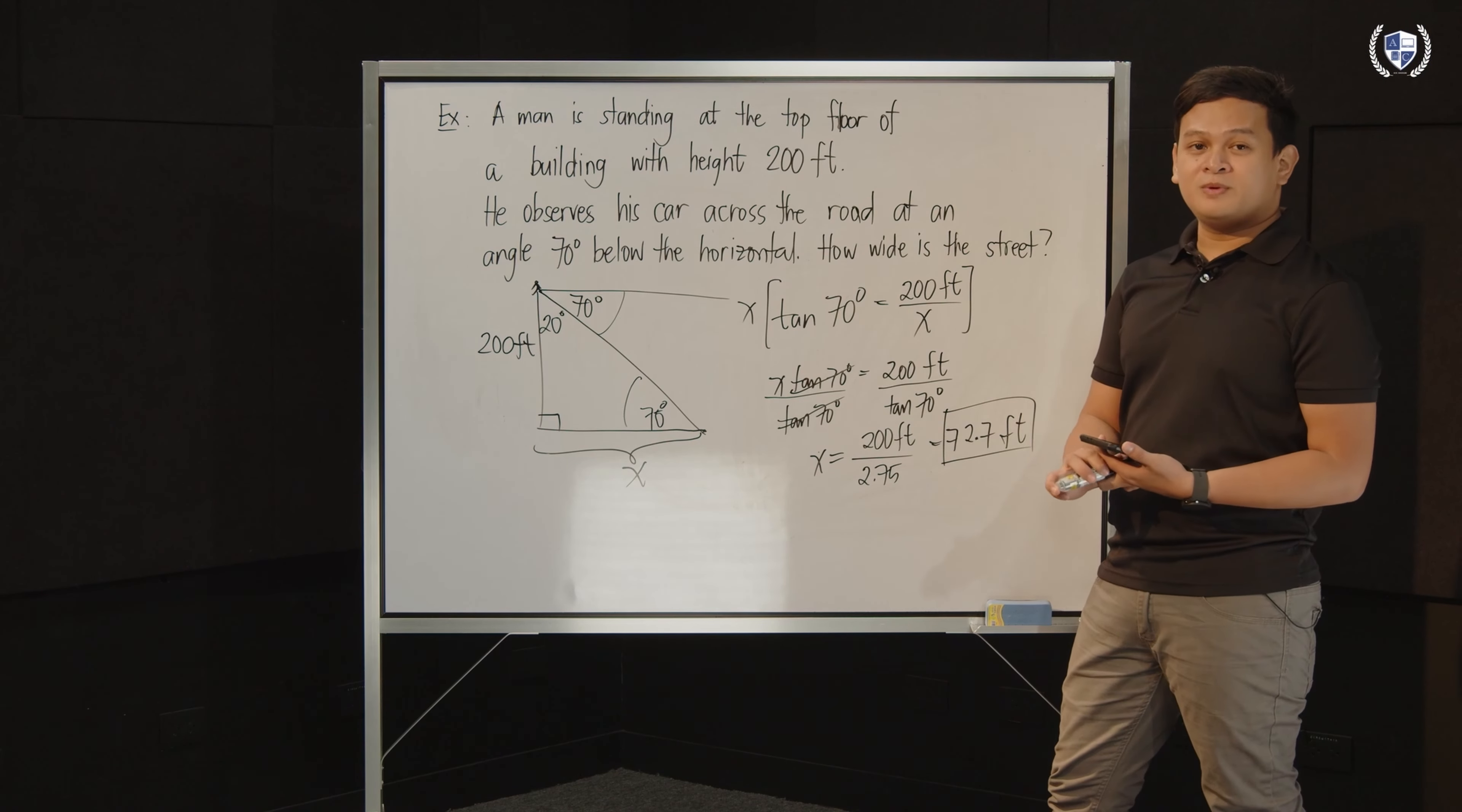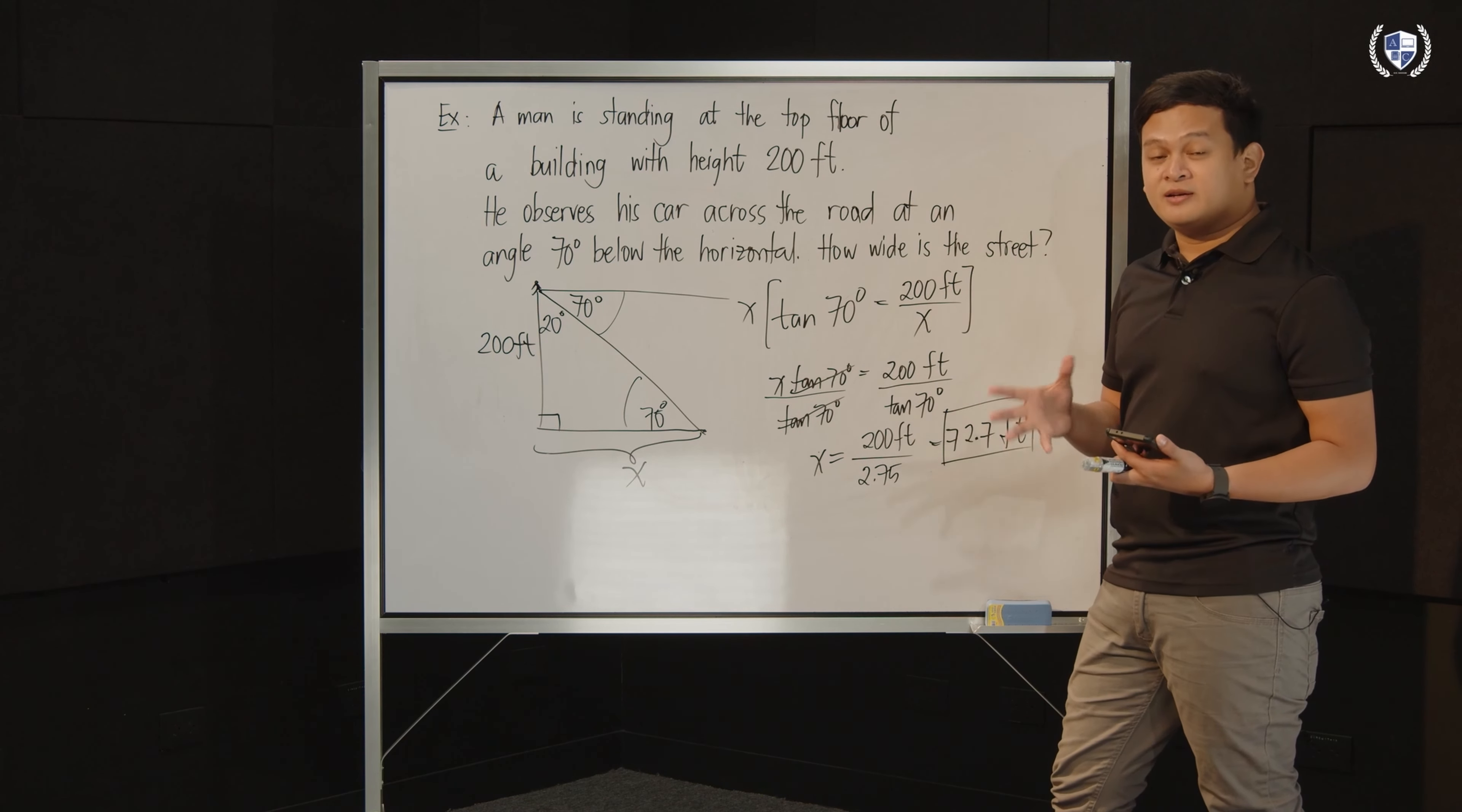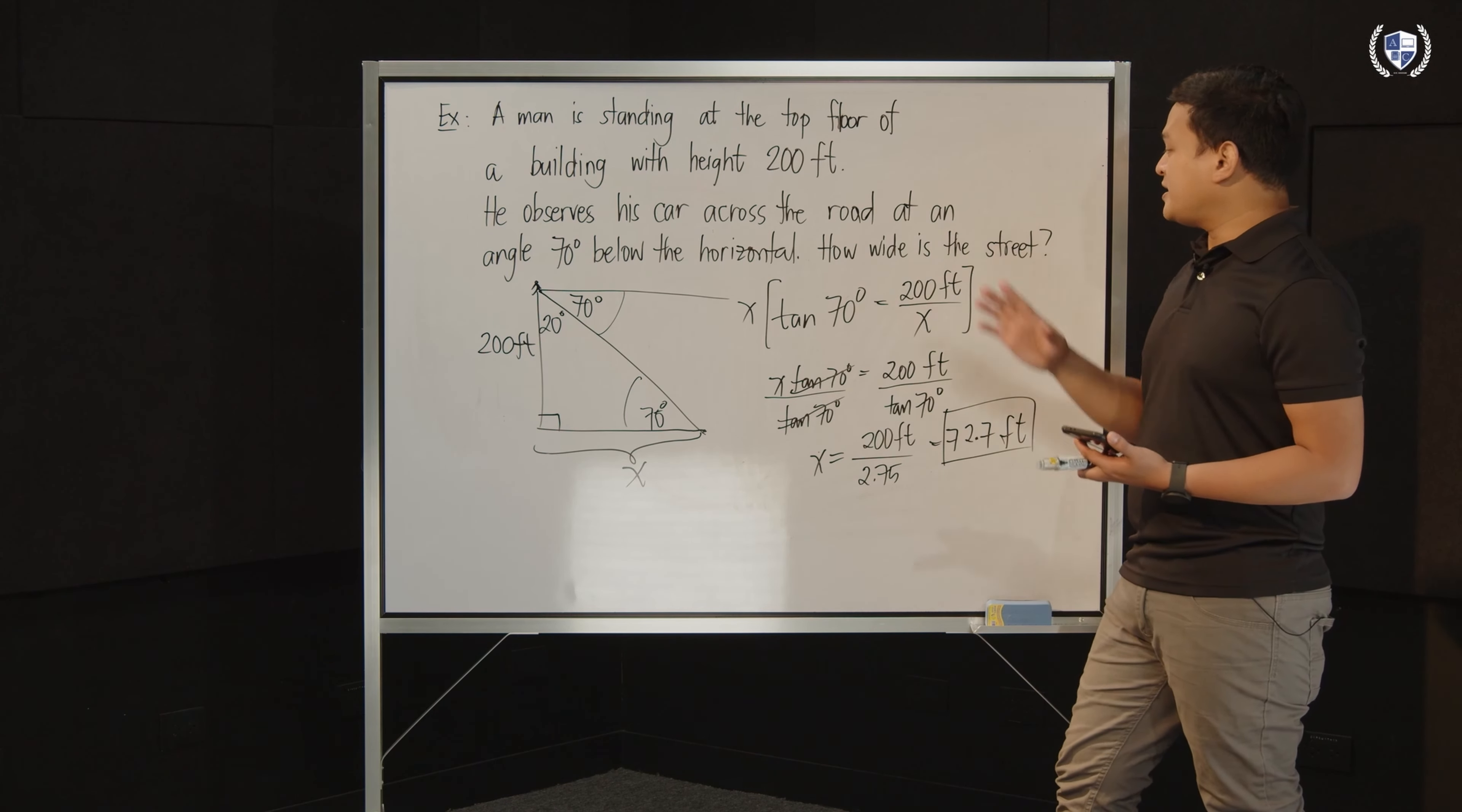Did we finish the problem? Yes, we finished the problem. We simply drew the problem. Illustrated the problem. Used the appropriate function. We looked for which among the three - sine, cosine, tangent. And it's better to choose functions that are in the scientific calculator that we can press right away. And then, doing your algebraic process, you will be left with the value 72.7 feet. So, that's how wide the street is.